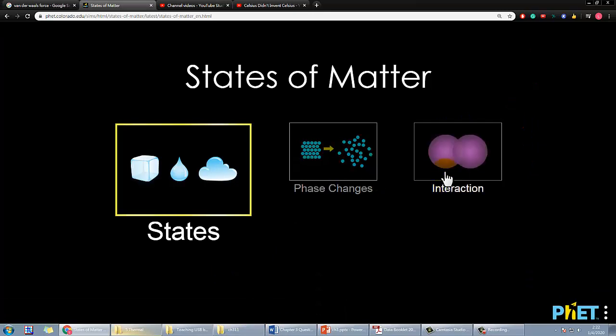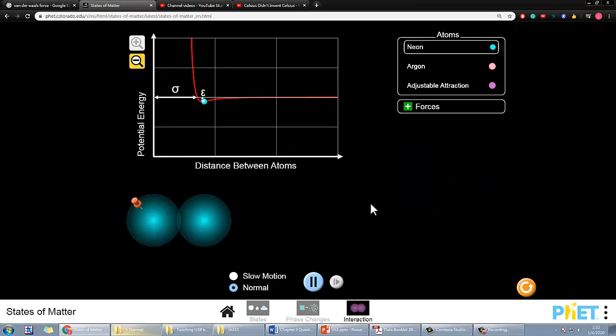We can also illustrate this by using a simulation that we had used earlier, which is this one. Again, I'll put a link in the description if you want to use it. Basically this is the diagram that we have. The most important thing that you should find out is at the lowest level here, this is where you have the particle at the most stable state.